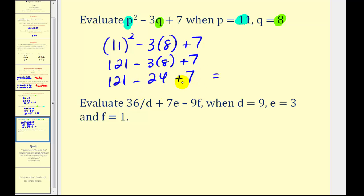And now we'll add and subtract from left to right. So we'll have 121 minus 24, that's 97, plus 7 equals 104.